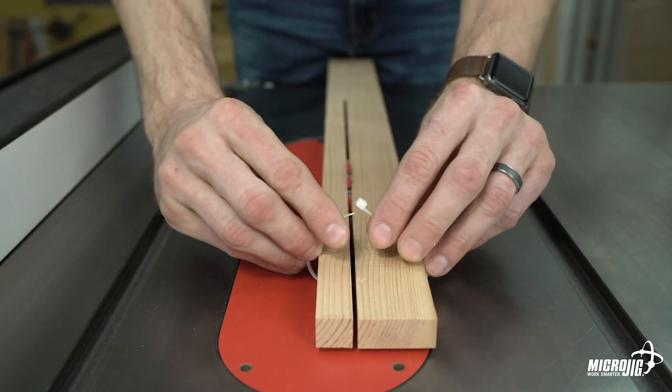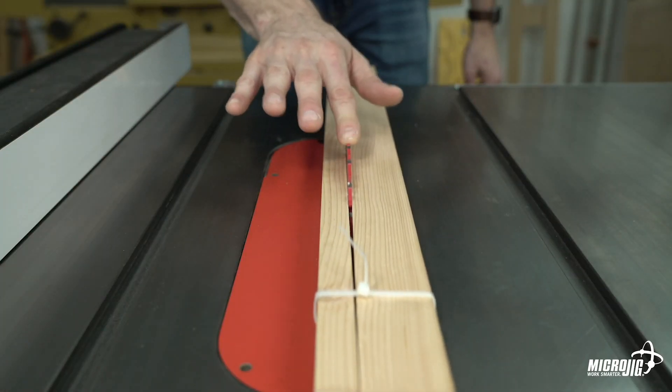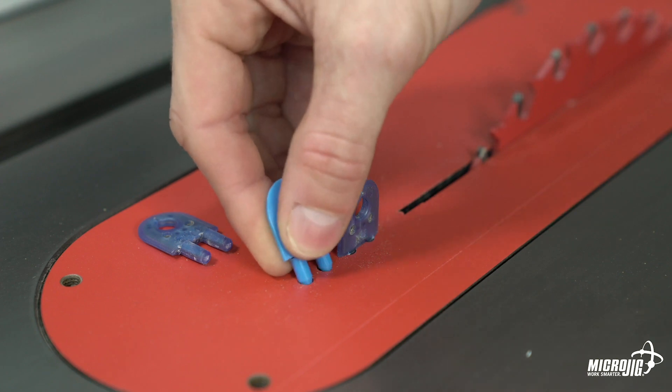When ripping hardwoods with unpredictable, potentially dangerous internal stress, the included kerf keepers auto-eject to remain within the kerf.